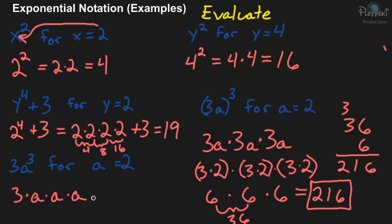And now we substitute a 2 in for the a's. So it's going to be 3 times 2 times 2 times 2. And 2 times 2 is 4 times 2 is 8. So we have 3 times 8. 2 times 2 is 4, and that 4 times 2 is 8. So it's 3 times 8 will give you a 24. And that's your answer for that one.